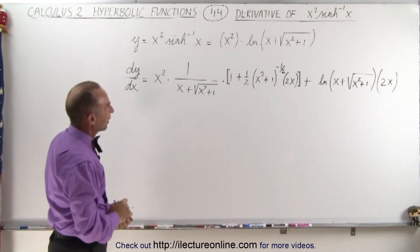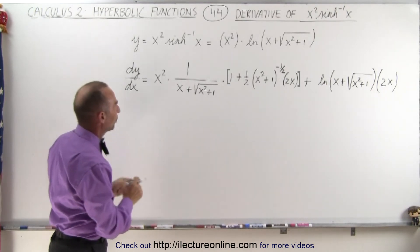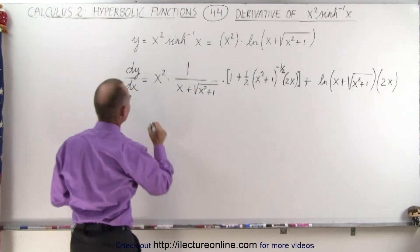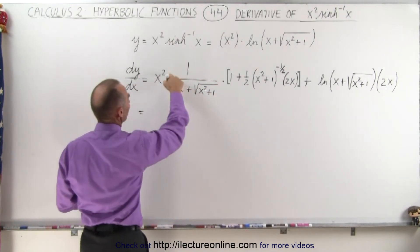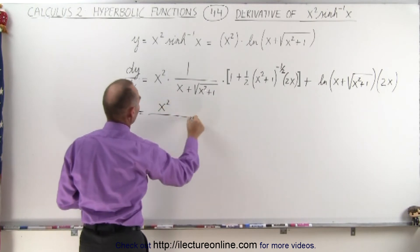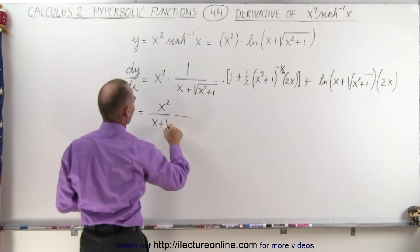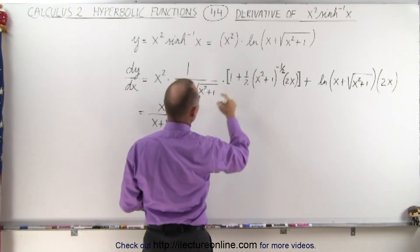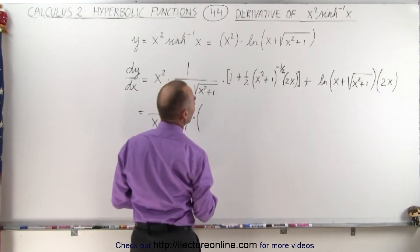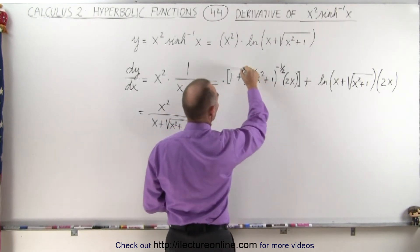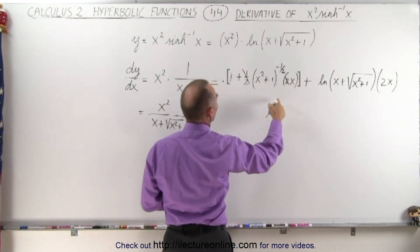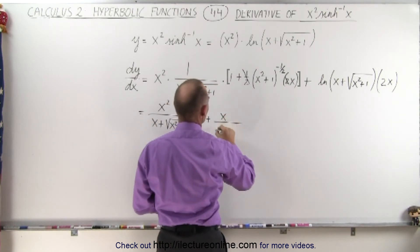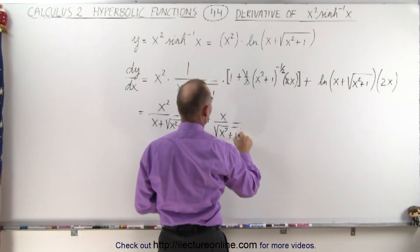So it looks like we have two separate terms. We have the first term, which we can simplify, and we have the second term. This becomes equal to x squared divided by x plus the square root of x squared plus 1. That would be times this quantity — we have a one-half times 2x, so the one-half cancels the 2 — so we have 1 plus x divided by the square root of x squared plus 1.